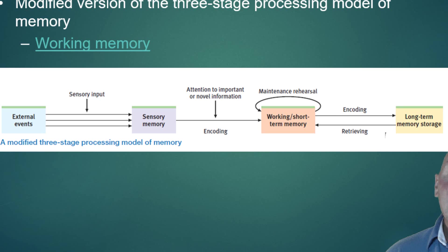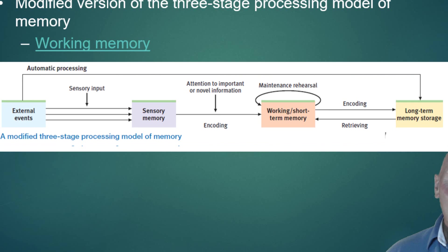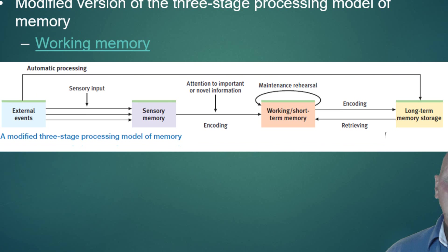We can retrieve from long-term memory and bring it back into what we used to call short-term memory — so it's not really short-term anymore, which is kind of a misnomer. Also, sometimes external events happen and we don't even effortfully process them, but the information runs all the way into our long-term memory where we can retrieve it and use it without any effort at all. Wouldn't it be nice to remember everything without effort?